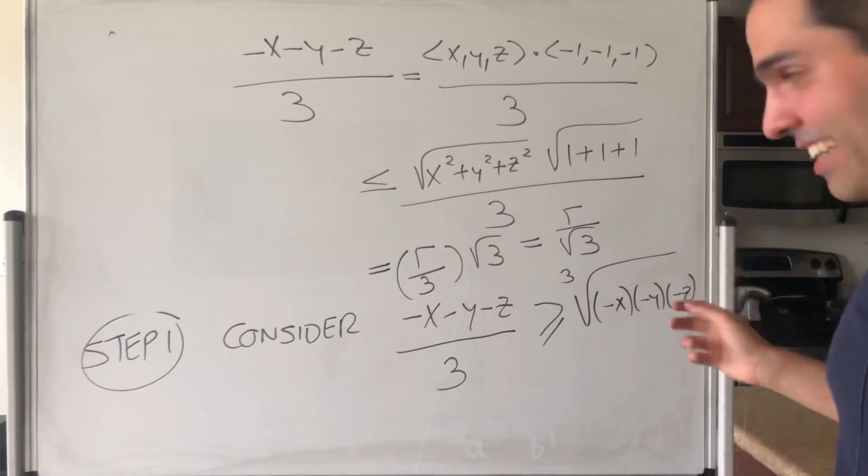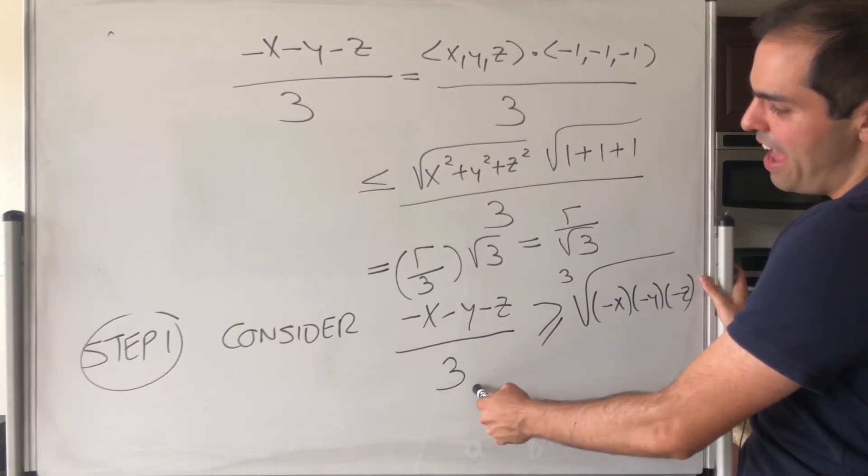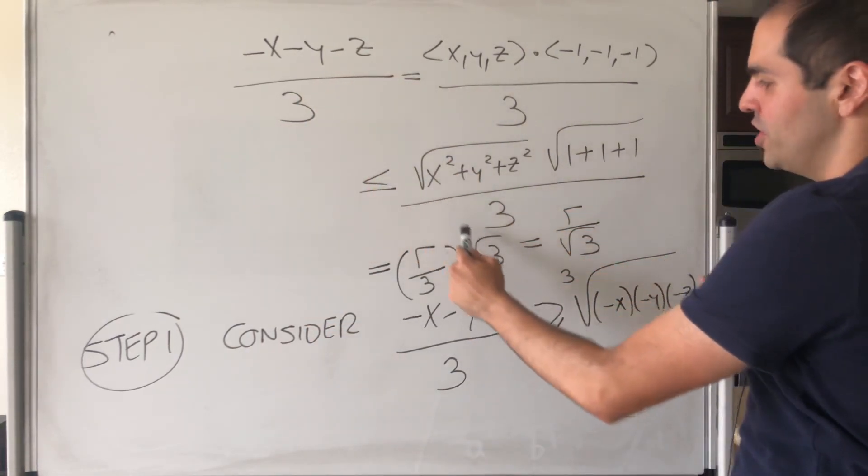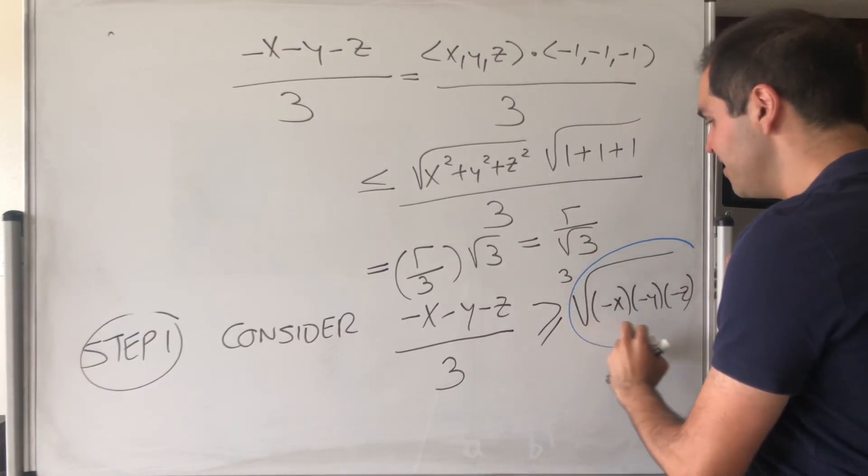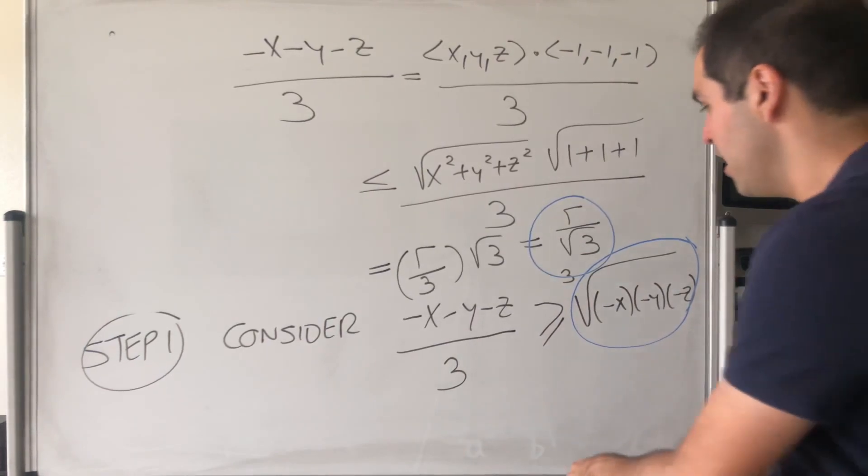But now, remember, this is not arbitrary. Since we are on the sphere of radius r, this just becomes r over 3 times square root of 3, and which is just r over square root of 3. So, unraveling this, starting with this, less than or equal to that by arithmetic geometric mean, less than or equal by Cauchy-Schwarz, what we ultimately get is that this term is less than or equal to this term. And that will be very useful.